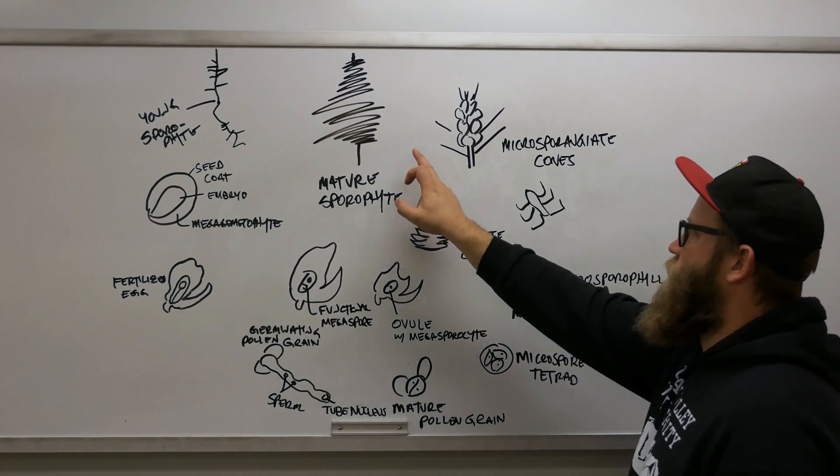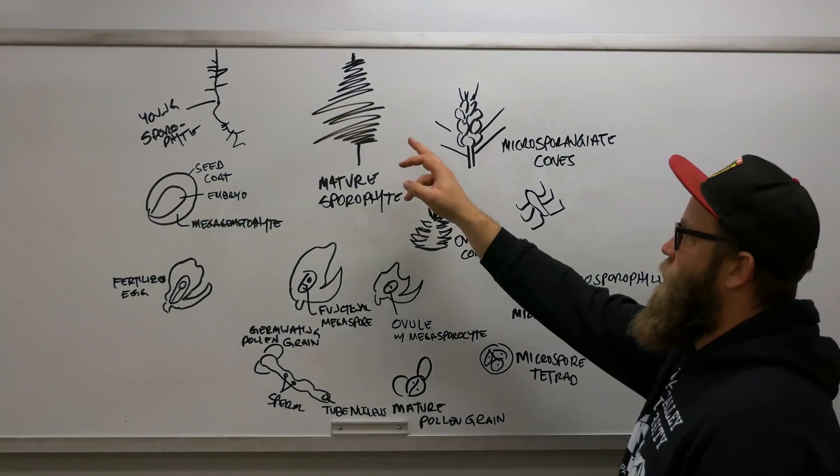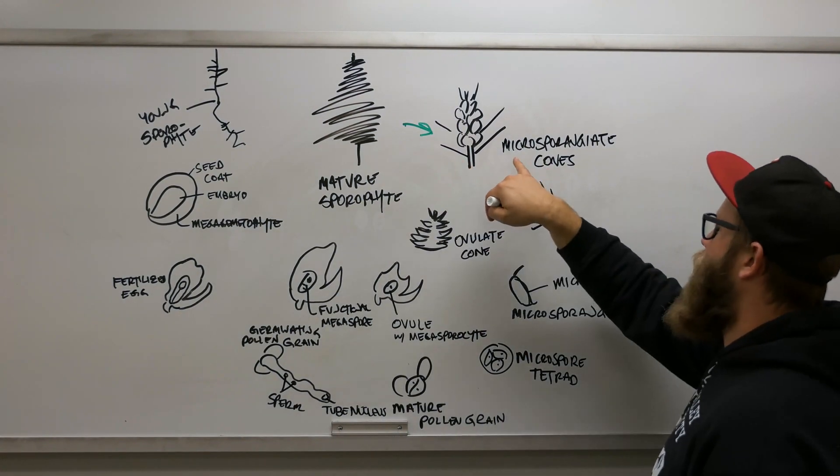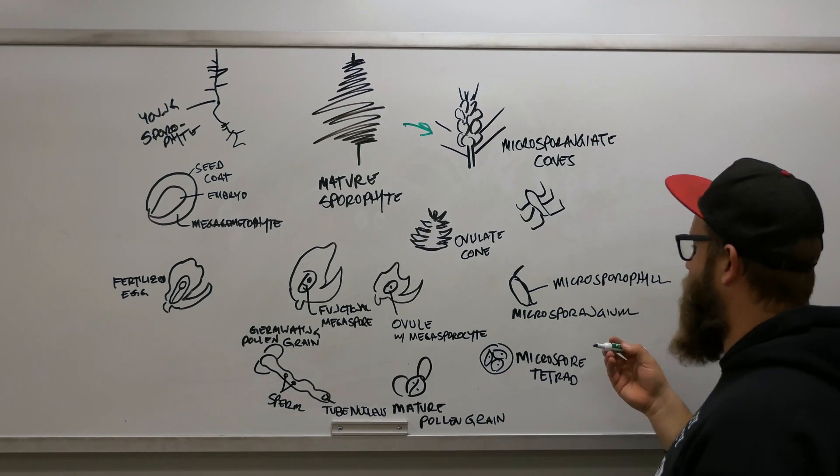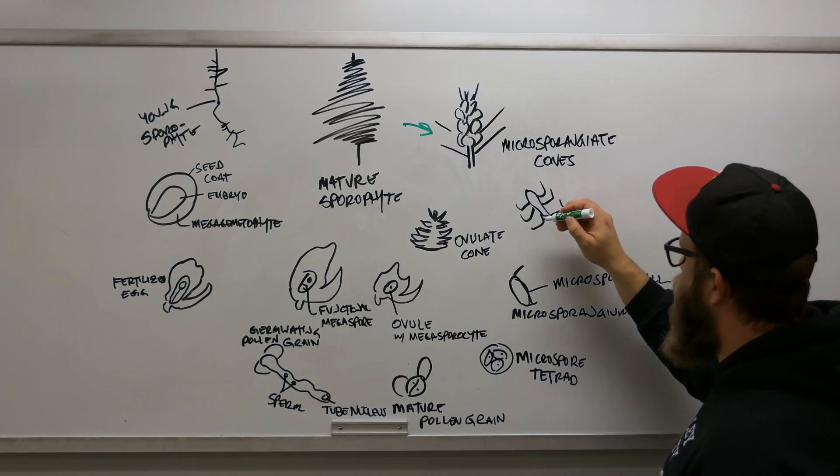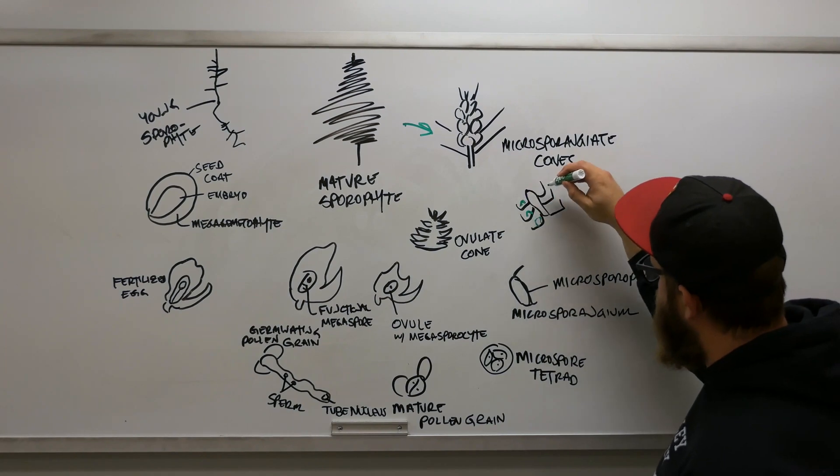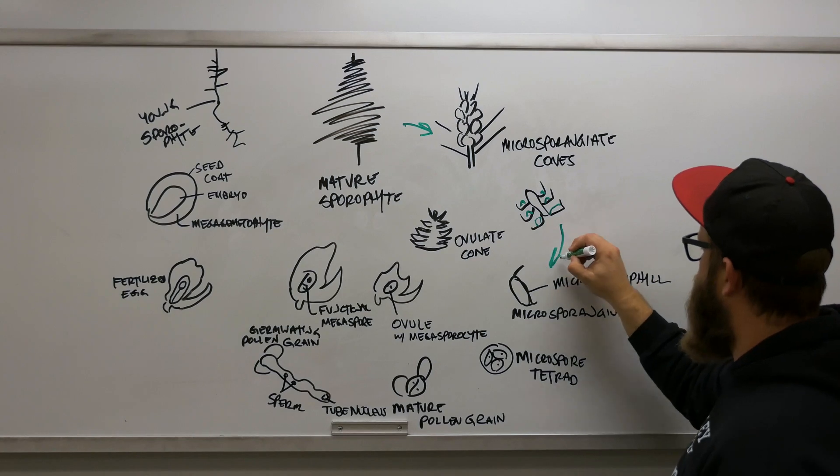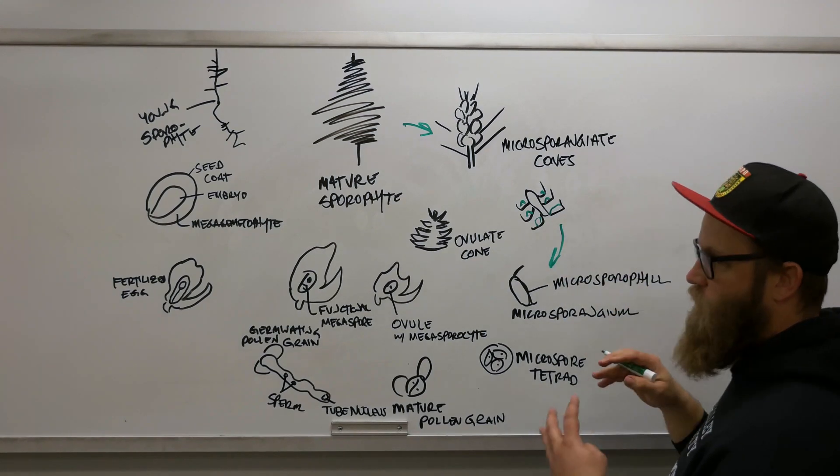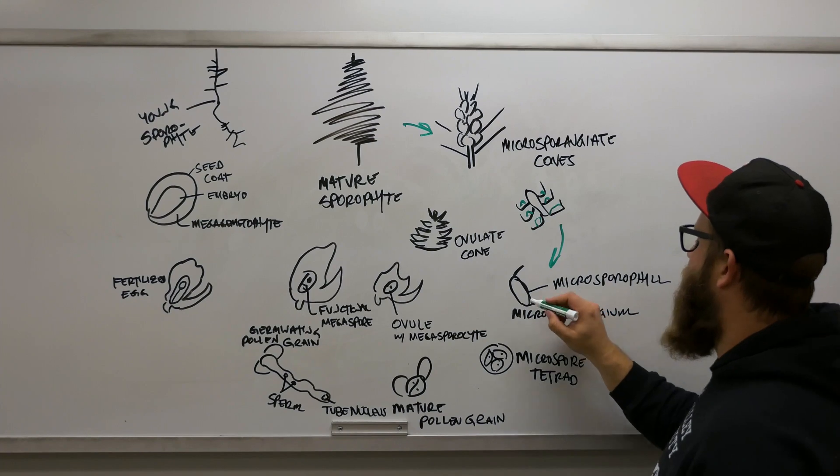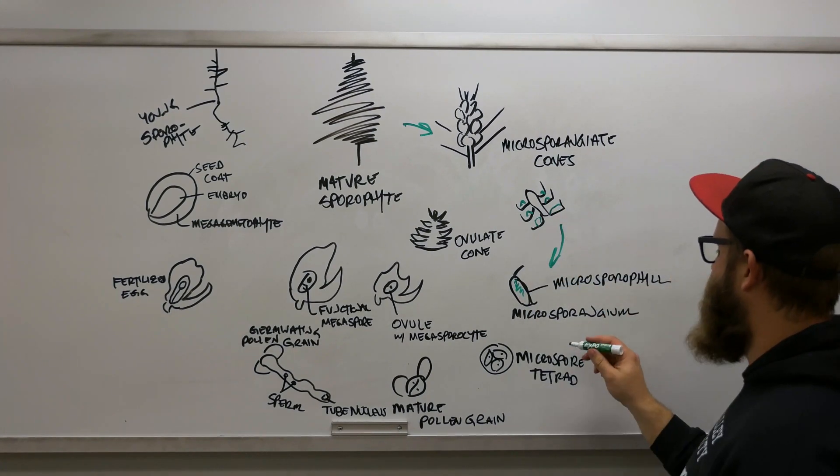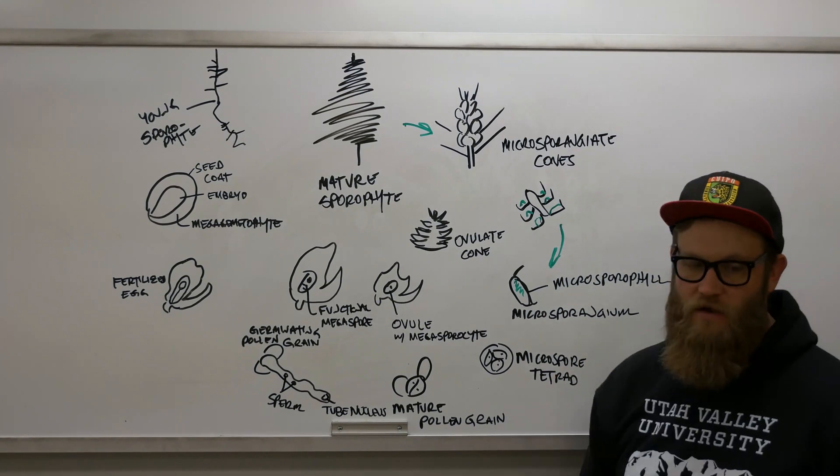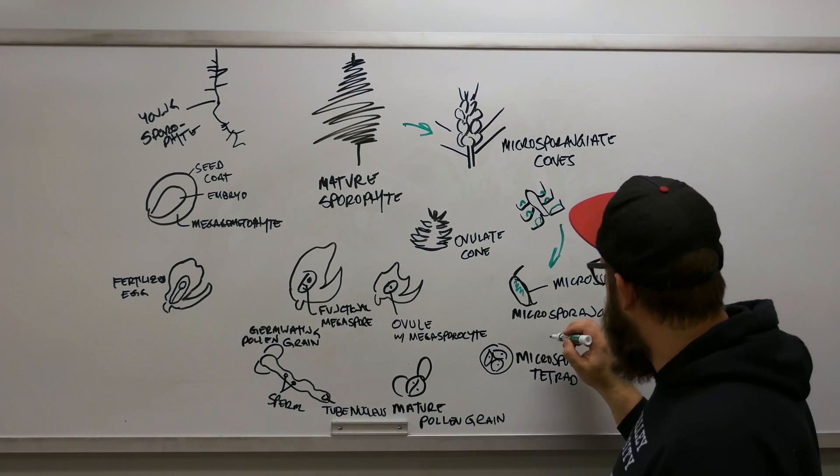That's our mature sporophyte. If we go here to the microsporangia or the male cones, we have a cross section. We can see there's these little structures inside here, looking more like this microsporophyll. Remember the 'phyll' means leaves, and then this microsporangium tissue. It's right here that meiosis occurs.